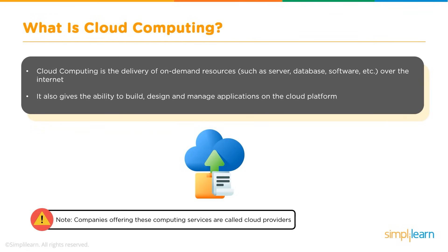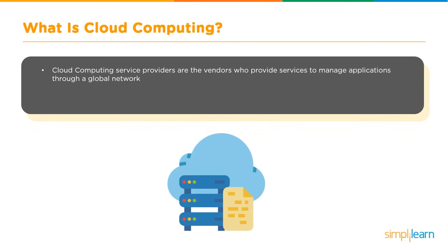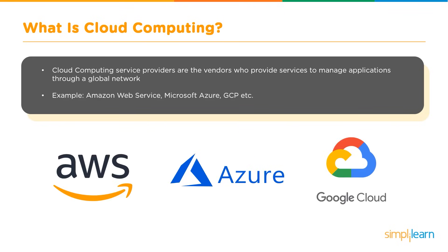Companies offering these computing services are called cloud providers. Cloud service providers — also called vendors — provide services to manage applications through a global infrastructure or global network. Some primary examples are AWS, Microsoft Azure, and Google Cloud, which are the three main cloud providers in the market.